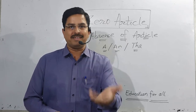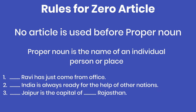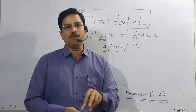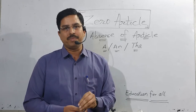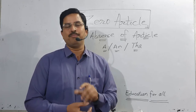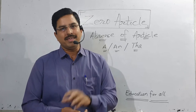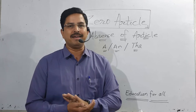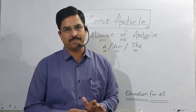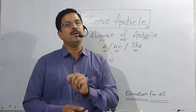In your slide the first sentence is: 'Ravi has just come from his office.' Second: 'India is always ready for the help of other nations.' Third: 'Jaipur is the capital of Rajasthan.' In these three sentences, Ravi, India, Jaipur, and Rajasthan are all proper nouns — before these we do not use any article.